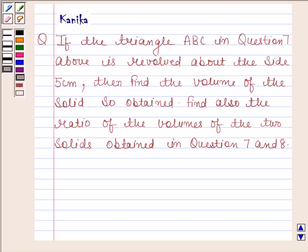Hi and welcome to the session. Let us discuss the following question. The question says if the triangle ABC in question 7 above is revolved about the side 5 cm, then find the volume of the solid so obtained. Find also the ratio of the volumes of the two solids obtained in question 7 and 8.